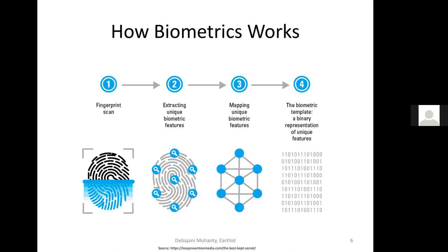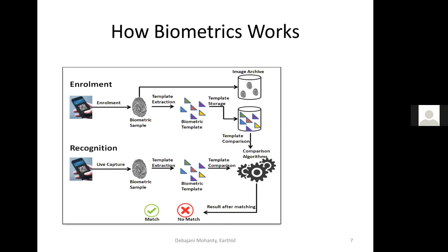This is known as the enrollment phase, where biometric data is captured and stored in a template database. Just like user ID and password systems have registration and login, biometrics has two phases. The first is enrollment, where you provide your biometrics to the system and it's saved as templates. At a later point, when you want to log in — called recognition — your biometrics is captured again, a new template is extracted, and those two templates are compared. Each system has a threshold value: if the match exceeds the threshold, it's considered a match; otherwise, no match.